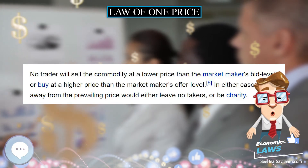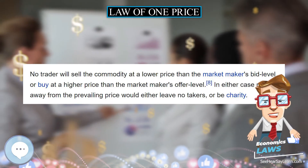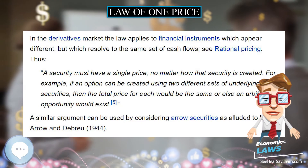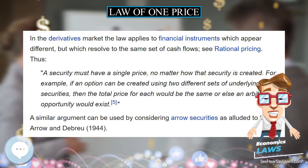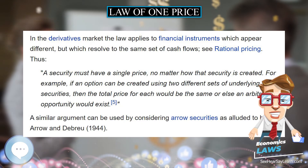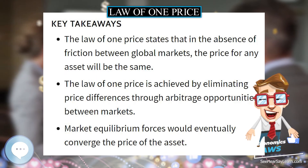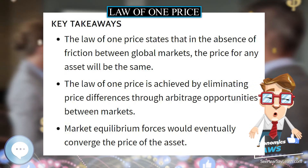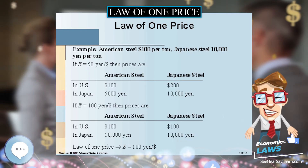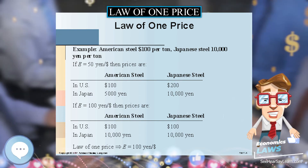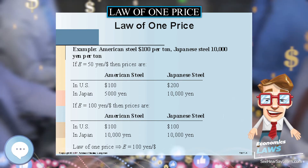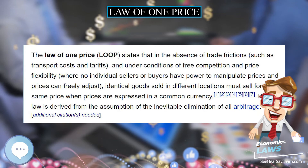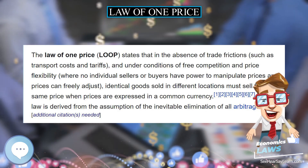No trader will sell the commodity at a lower price than the market maker's bid level, or buy at a higher price than the market maker's offer level. In the derivatives market, the law applies to financial instruments which appear different but which resolve to the same set of cash flows. See rational pricing.